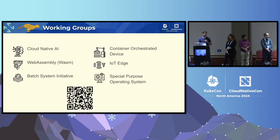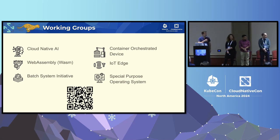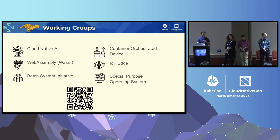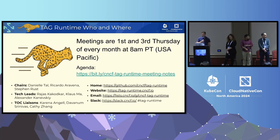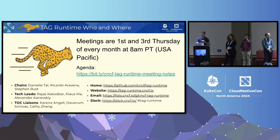Runtime has six working groups today. A tag doesn't necessarily have to have working groups, but a lot of our communities have built up around these areas — AI, WebAssembly, container orchestrated devices, and more. We work with the TOC liaisons in Runtime for all of our efforts and hold public meetings. Please come if you're interested in any of these topics, and we'll have some QR codes later in the slides.